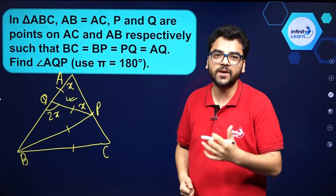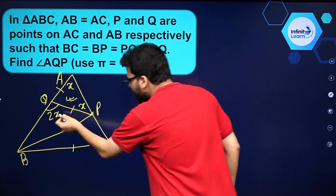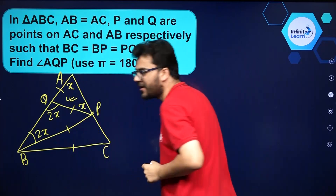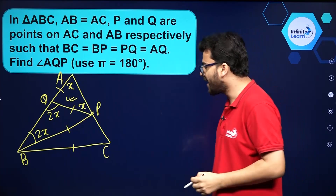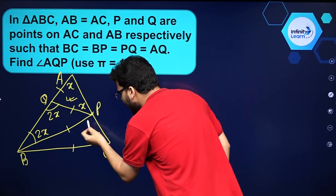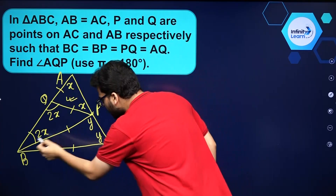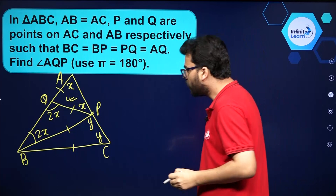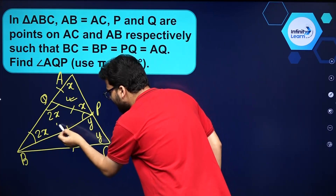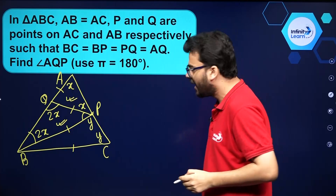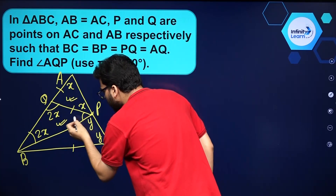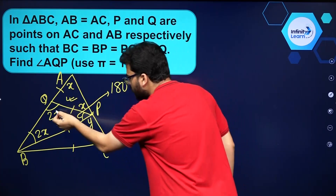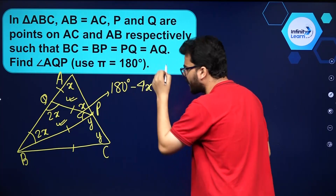Again, angles opposite to equal sides are equal. Since PQ equals AQ, if this angle is 2x, this will also be 2x. Similarly, if I assume this angle to be y, this will also be y because angles opposite to equal sides of a triangle are equal. Using the angle sum property, this angle will be equal to 180 minus 2x plus 2x, which simplifies to give 4x.